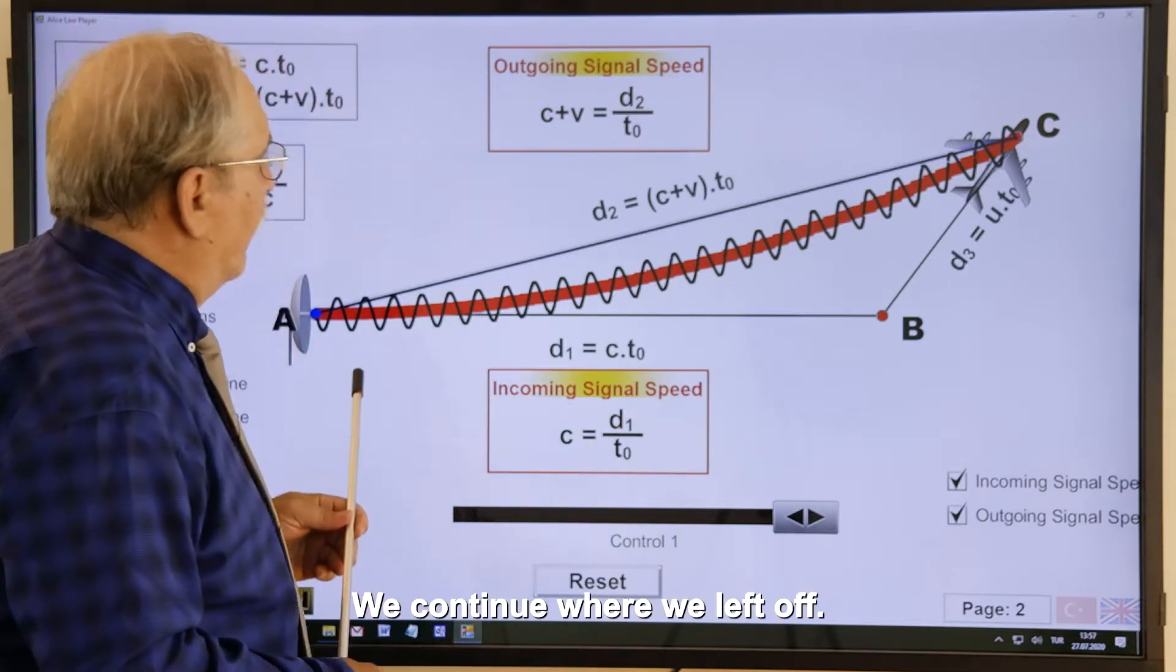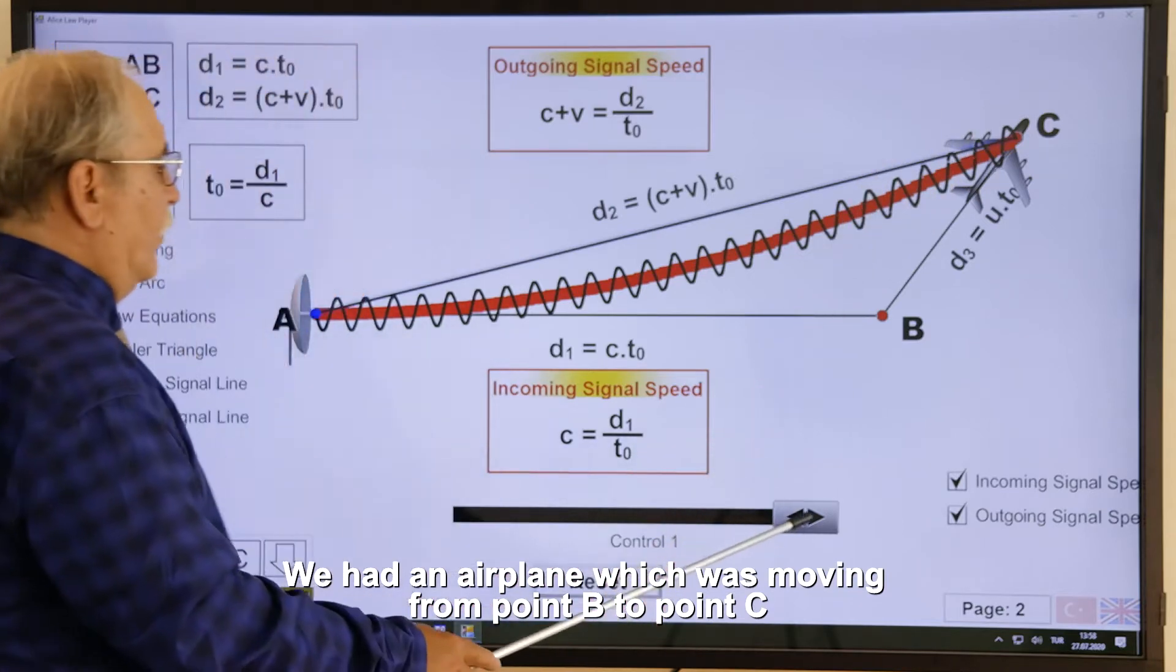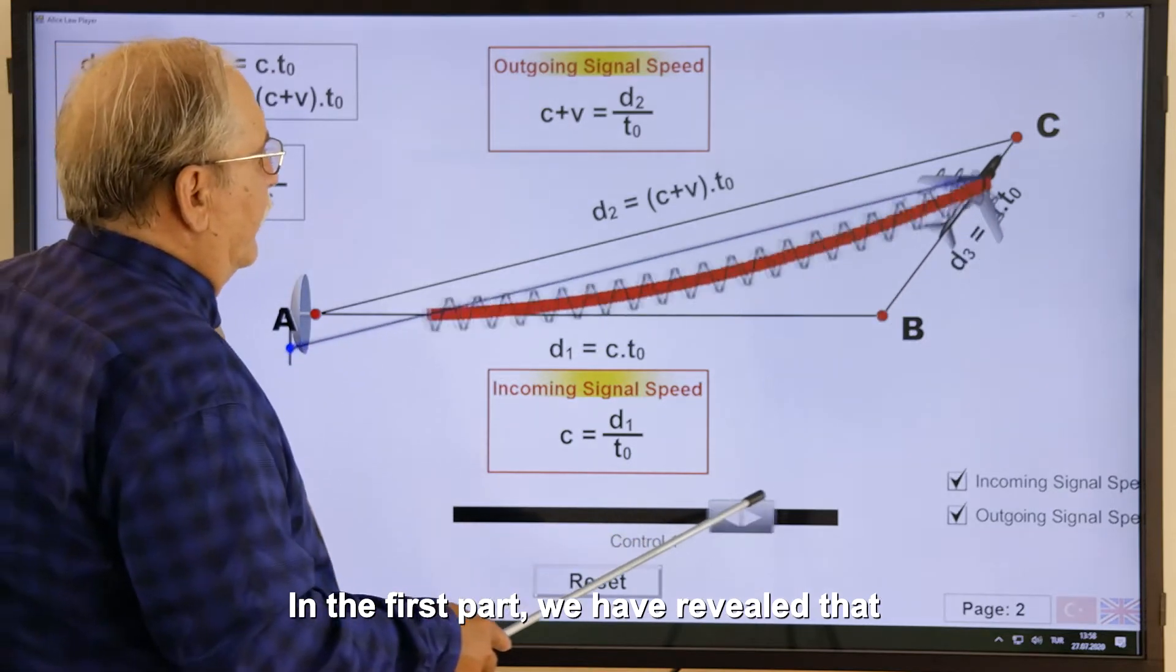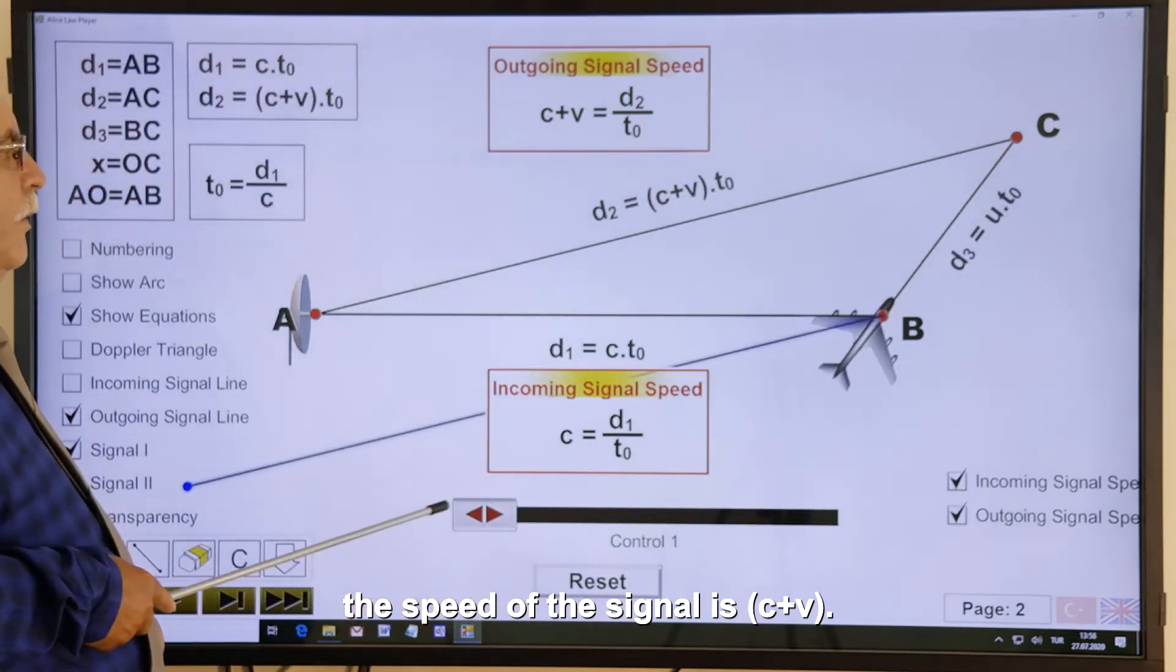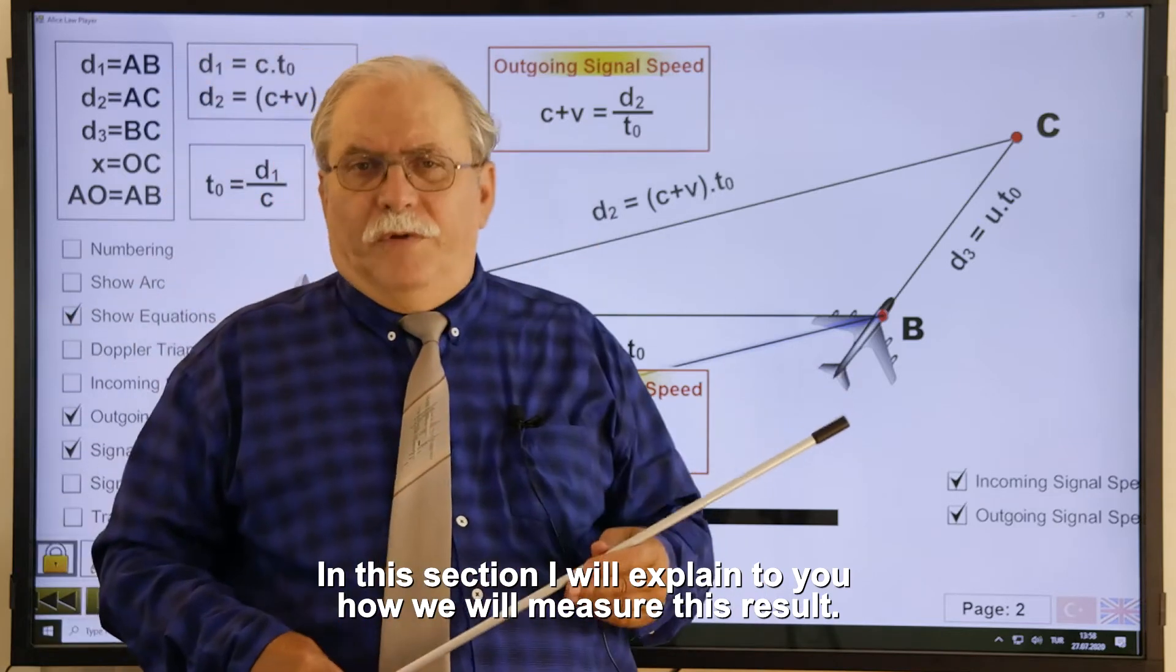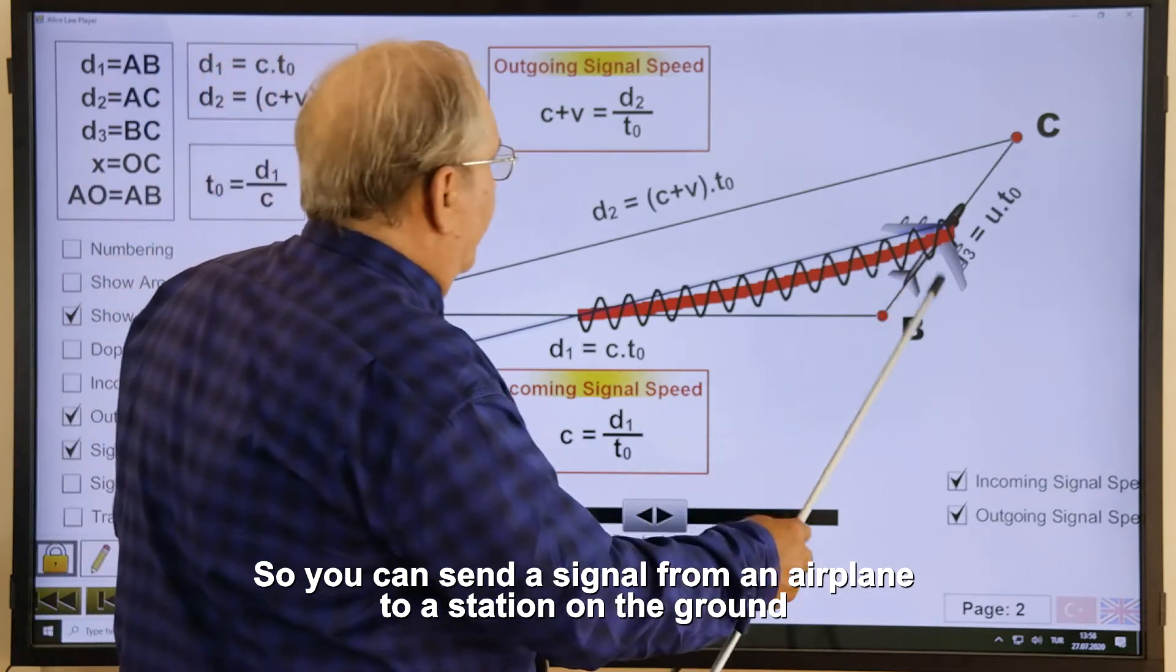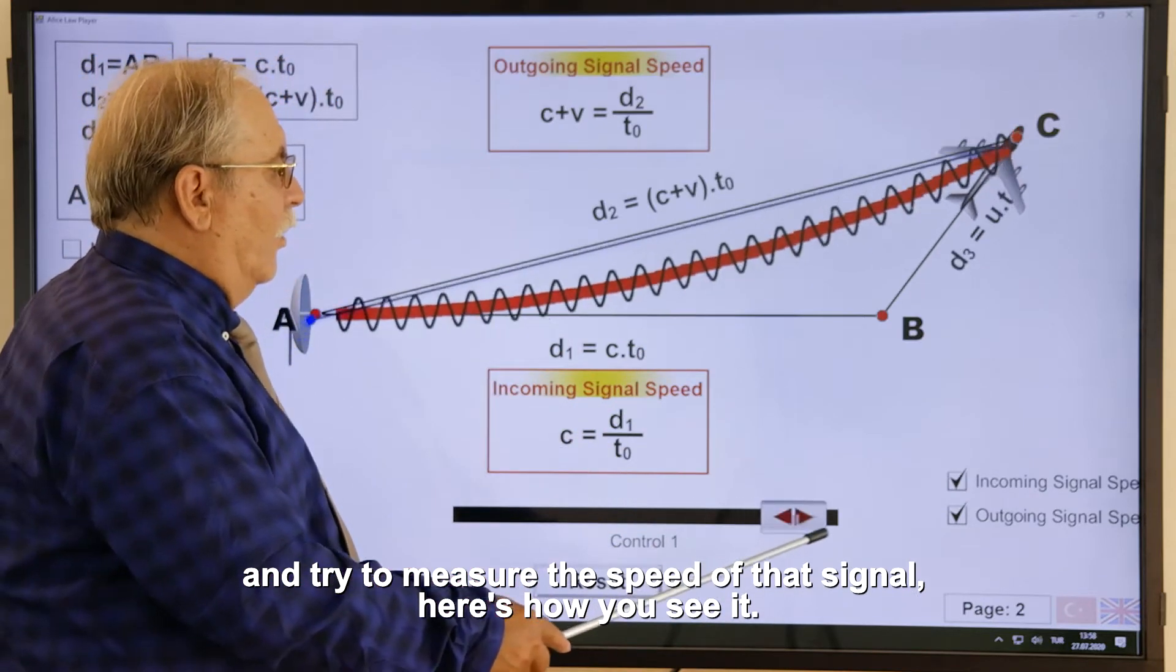We continue where we left off. How was the subject? We had an airplane which was moving from point B to point C. And according to the reference system of the plane, we have revealed that the speed of the signal is C plus V. In this section, I will explain to you how we will measure this result. Of course, you can send a signal from an airplane to a station on the ground and try to measure the speed of that signal. Here's how you see it.